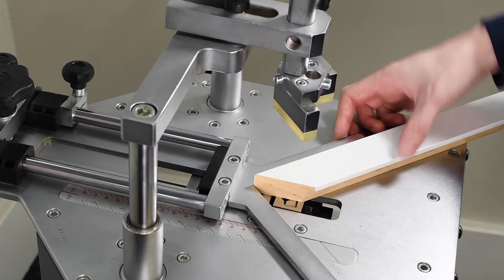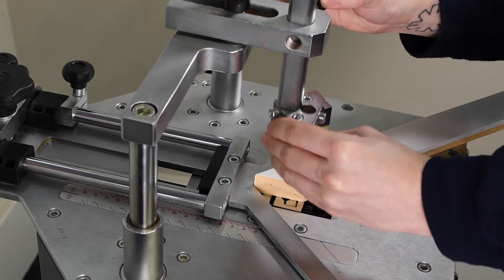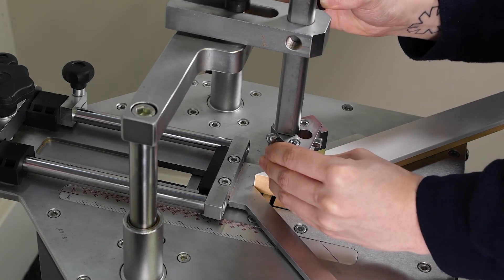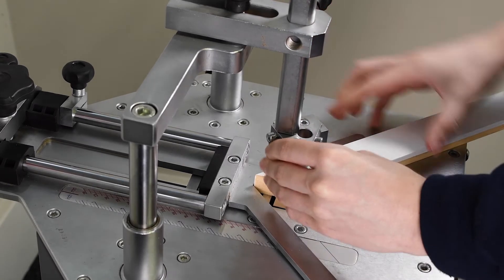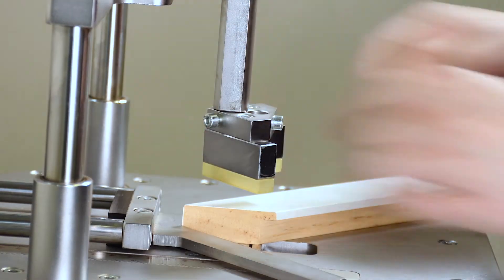The top clamp will hold the moulding in place when the V nails are being inserted, and the double piston mechanism helps distribute pressure evenly. Set this clamp at around 20 millimetres above the moulding.